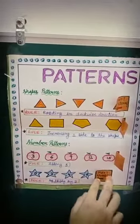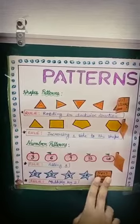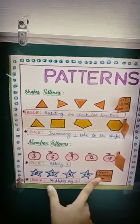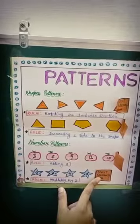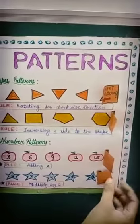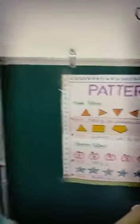You can see the pattern followed here is the table of two. So the next number will be eight, and the rule is multiplied by two.